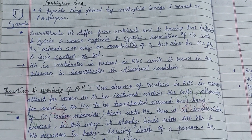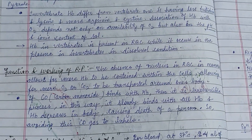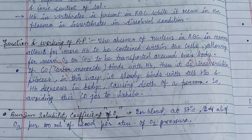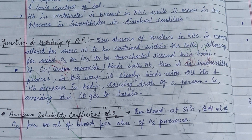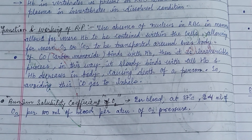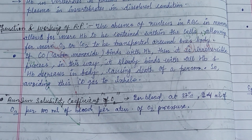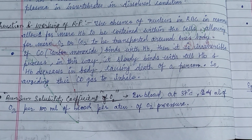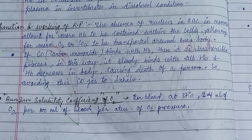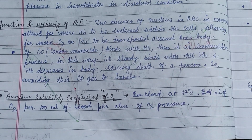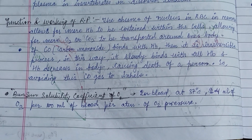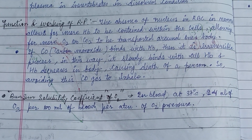Regarding the function of respiratory pigments: the absence of a nucleus in mammalian red blood cells allows more hemoglobin to be contained within the cells, allowing more oxygen or CO₂ to be transported. If carbon monoxide binds with hemoglobin, it is an irreversible process; it slowly binds with all the hemoglobin and decreases oxygen in the body, causing death.